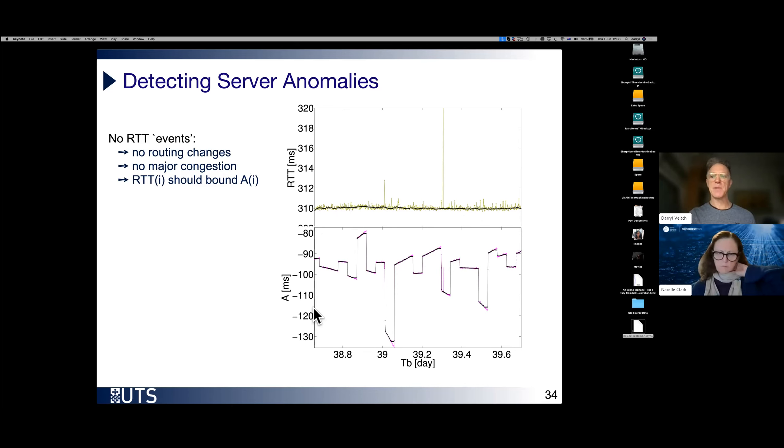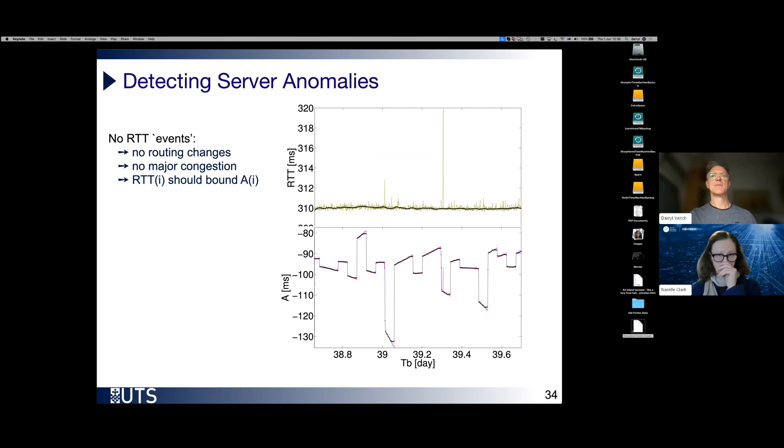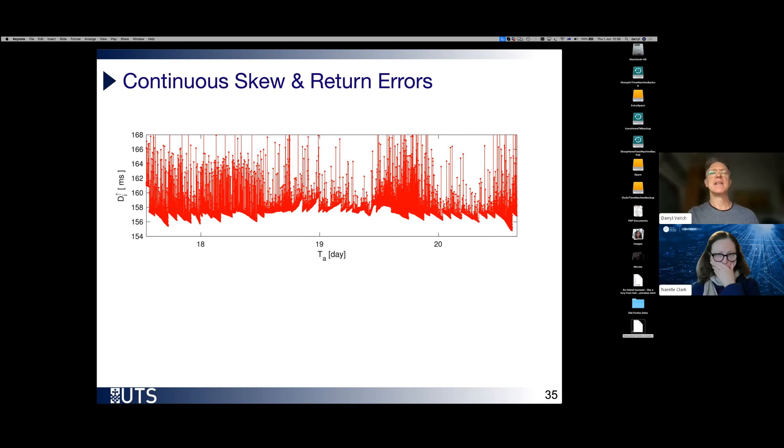So essentially, these changes cannot be due to routing, they cannot be due to congestion, they're due to the server. We call these server anomalies. And here is another example of server anomalies, much smaller in magnitude now, only one or two milliseconds. They're very distinct, very clear. This should be flat line with noise on top.